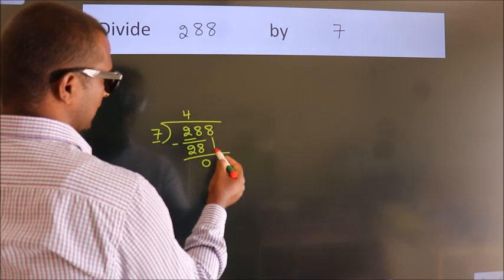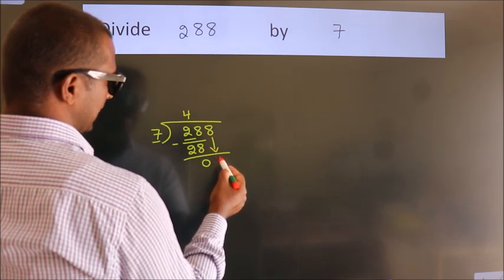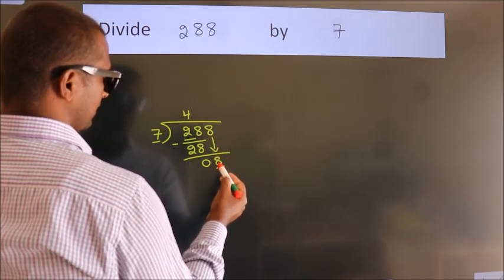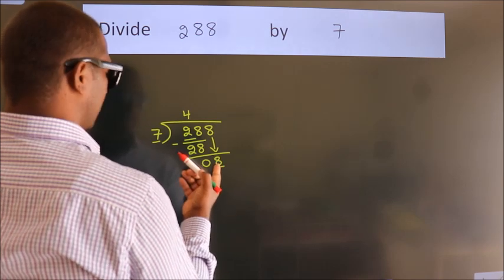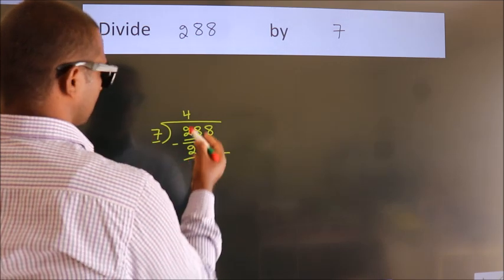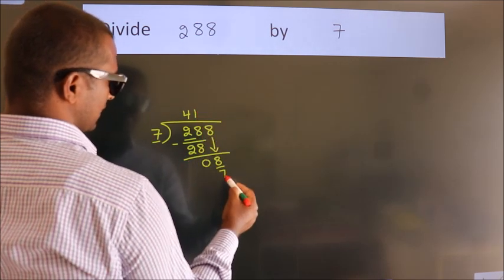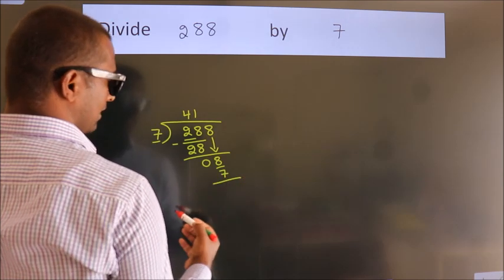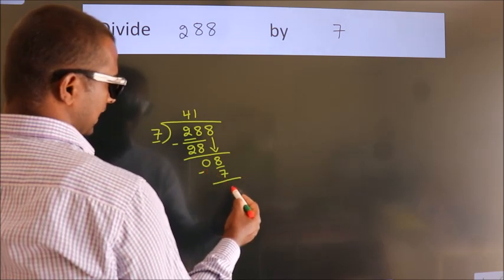After this, bring down the next number, so 8 down. So 8. A number close to 8 in the 7 table is 7 once 7. Now we subtract. We get 1.